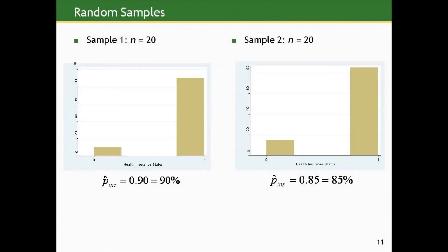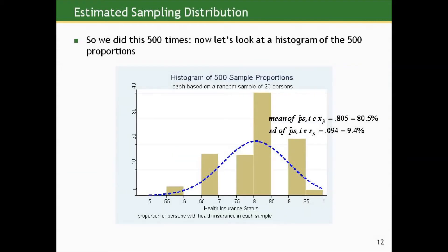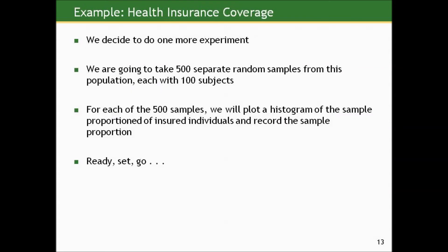Here's the first sample of 20 observations — 90% had health insurance. Sample two, 85% had health insurance. After doing this 500 times, here's a histogram of those 500 sample proportions. The mean is 0.805 or 80.5%, and the standard deviation is about 9.4%. A normal curve is superimposed — the histogram is crude but does exhibit some possibility of symmetry and bell-shapedness, though it doesn't fit the normal curve well.